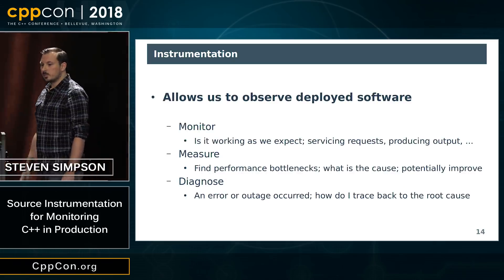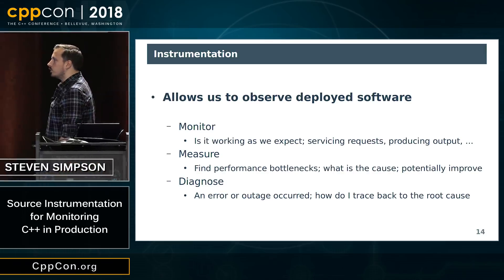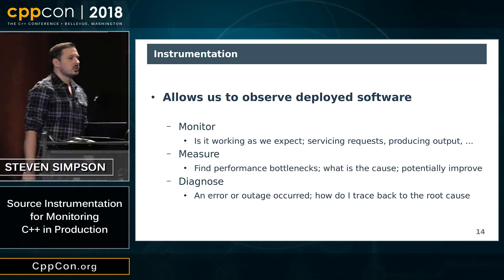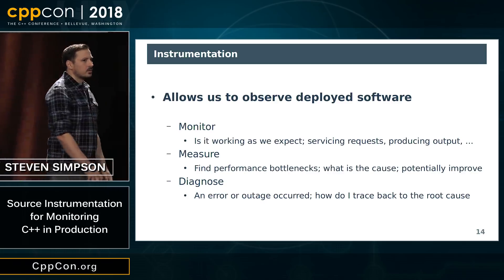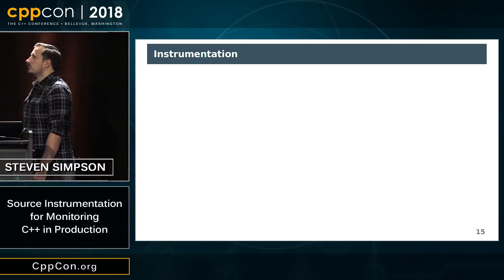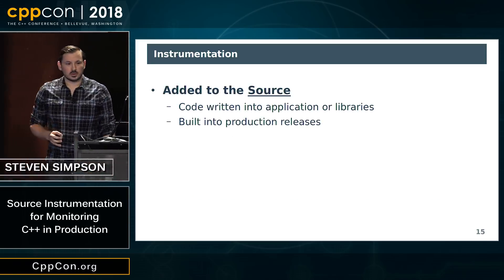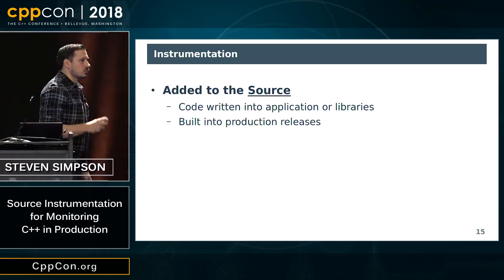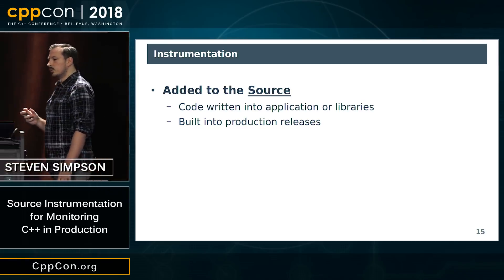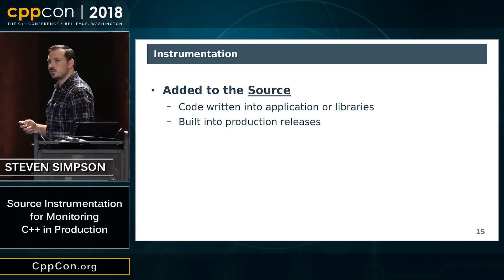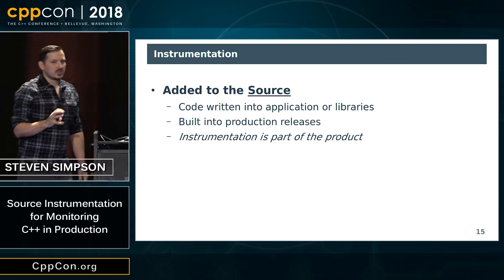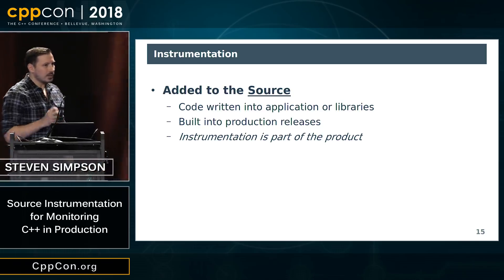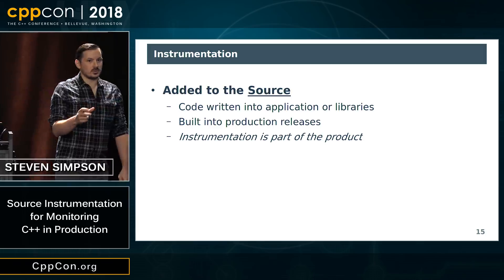Instrumentation allows us to observe deployed software. We can monitor that it's working, measure the performance of it as it runs, and diagnose errors when they occur and trace them back to what caused them. So we're going to talk about source instrumentation — adding code to your source, adding features to your code to instrument it. This is built into your production releases. The instrumentation is not something you just do in your debug build; this is something that's in your product, in your software. Your software becomes instrumented and it runs in that form.